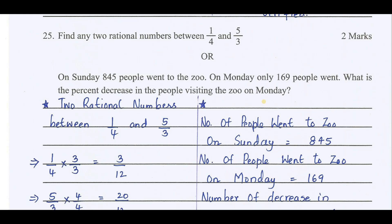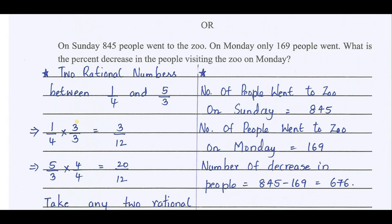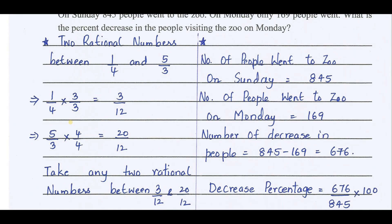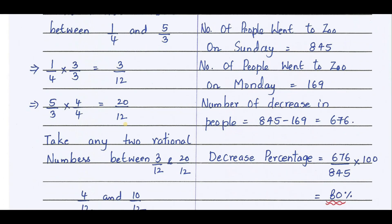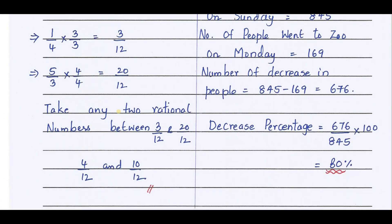Find any two rational numbers between 1/4 and 5/3. Make the denominator same. It will be easy for you. Between these two fractions, I am making the denominator same so that you can write any rational number between those two numbers. So, I have chosen 4/12 and 10/12.